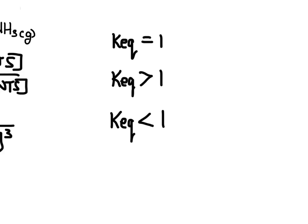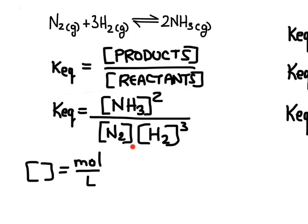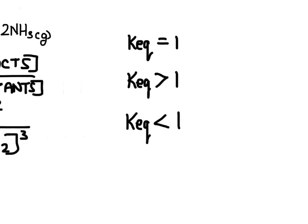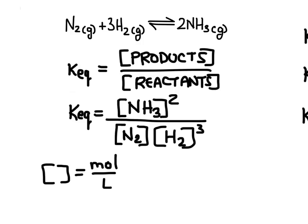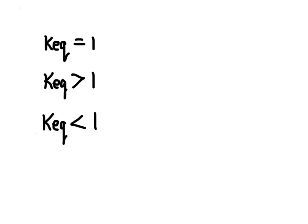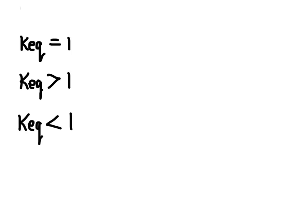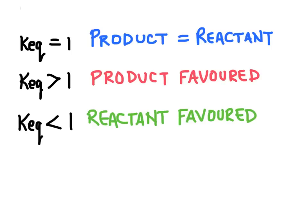If K_eq equals exactly 1, the amount of product is exactly equal to the amount of reactants, which is usually not ideal since we generally want to produce the stuff on the right side. If K_eq is greater than 1, there are more products than reactants — that's generally a good thing. If K_eq is less than 1, there are more reactants than products, meaning the reaction doesn't produce very much product. To summarize: K_eq equal to 1 means products equal reactants, greater than 1 is product favored, and less than 1 is reactant favored.